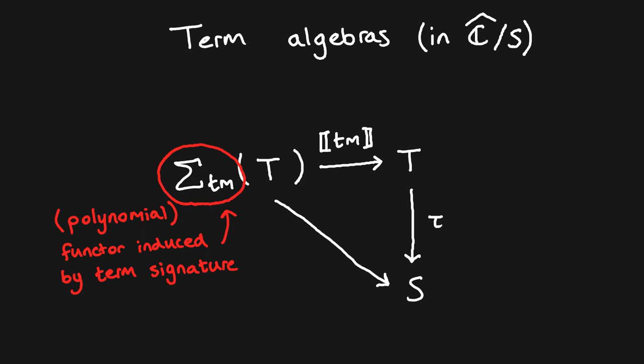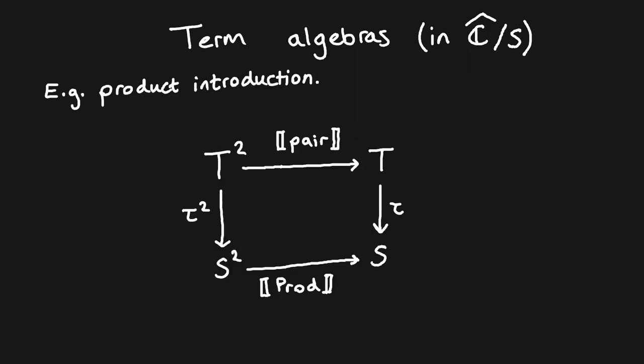Similarly to the structure for types, the term signature induces a functor Sigma on the presheaf slice category. The natural transformation 'term' ensures that T is closed under the term operations. Let's look at an explicit example. Here, T² together with a composite map tau² followed by the denotation of the product type constructor, is given by the application of the functor Sigma to the typed term structure T to S. The algebra structure means that T is closed under taking pairs of terms, such that the type of each pair is given by projecting the types of each component and then taking the denotation of the product of the two types. This is exactly the structure we should expect for a pairing operation on terms.